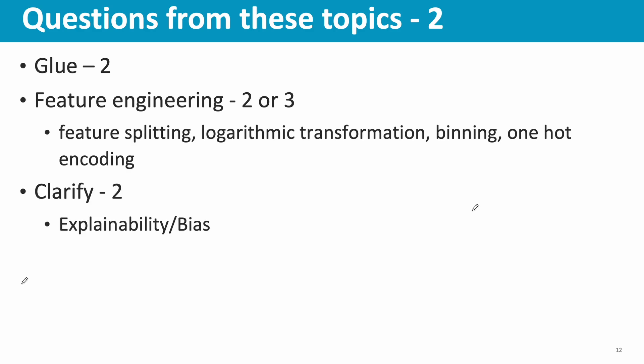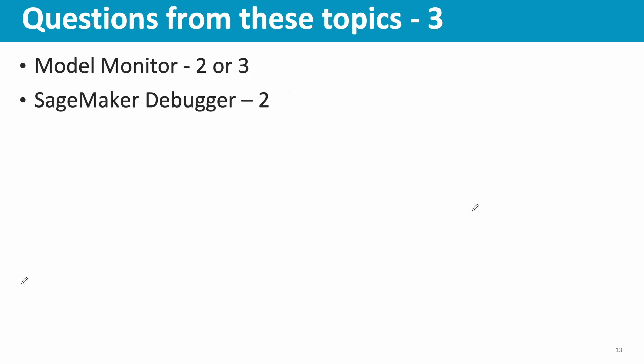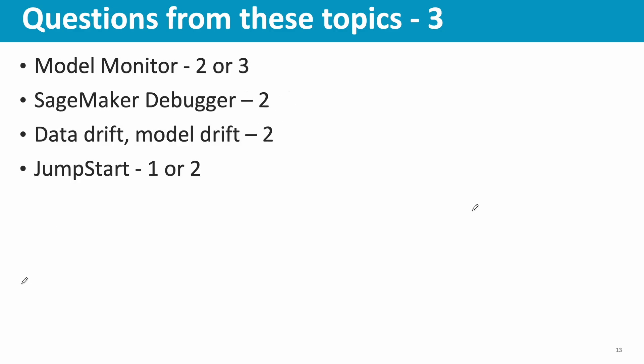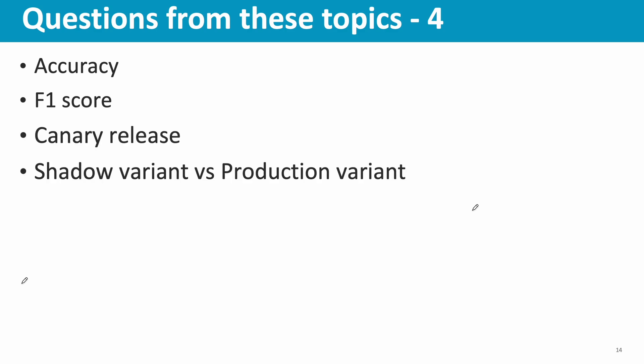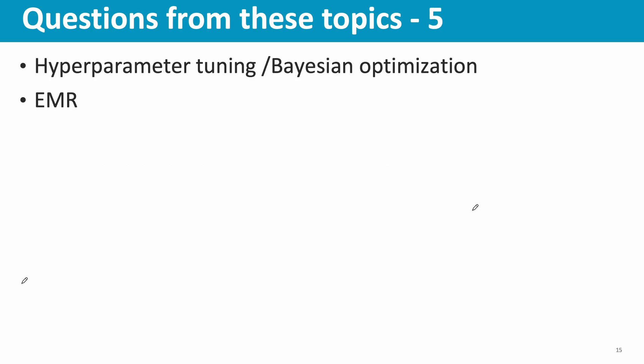Clarify, especially explainability and bias — a couple of questions. Model Monitor — two or three questions. SageMaker Debugger — a couple of questions. Data drift — one question. Model drift — one question. SageMaker JumpStart — one or two questions. Accuracy metrics — one question involving a use case where both false positives and false negatives are critical. F1 score — one question on why F1 score is decreasing. Canary release — one question. Shadow variant versus production variant — one question.